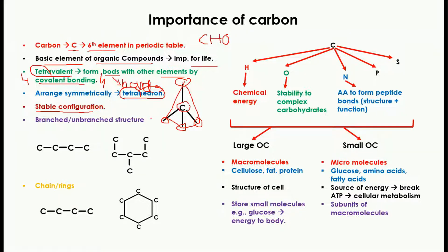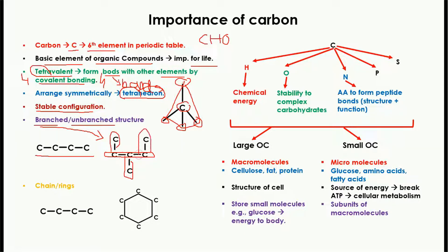Carbon forms two types of structures: branched or unbranched. In the unbranched structure, the carbons are arranged in a single straight line. In the branched structure, there are branches generating from that single line. You can see this one is the single line, while these others are branches of the carbon chain.